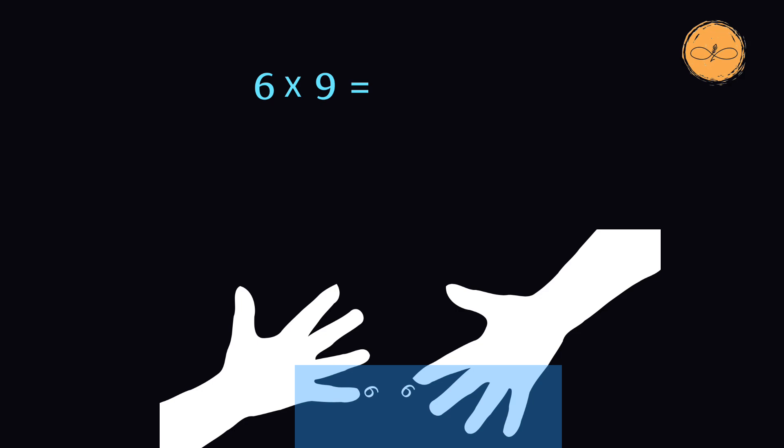So we have one finger on the left hand and 4 on the right hand, which becomes 5 fingers. This is 50 because the fingers that are below the fingers that are touching are always counted as tens.